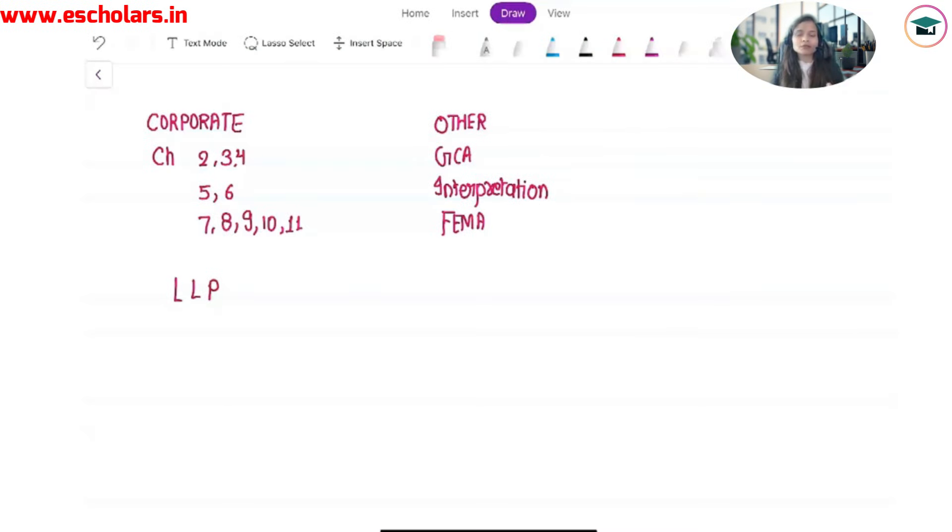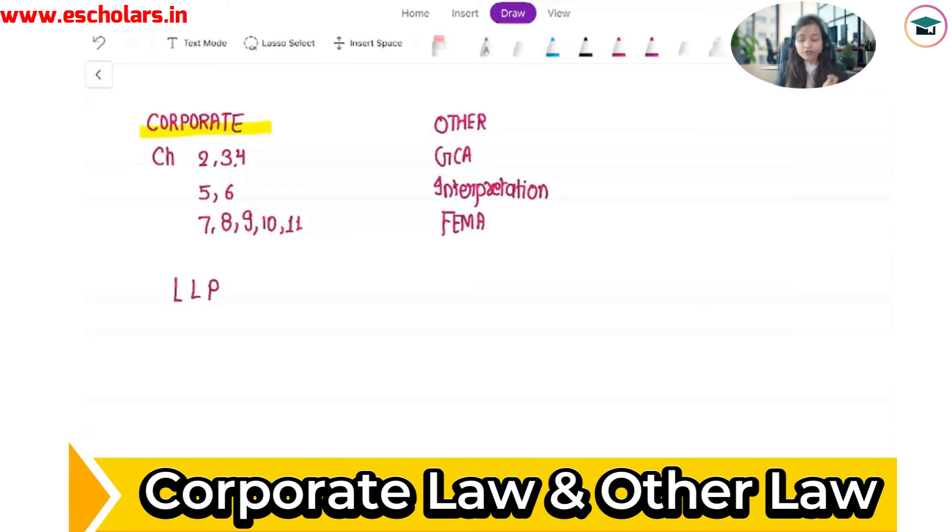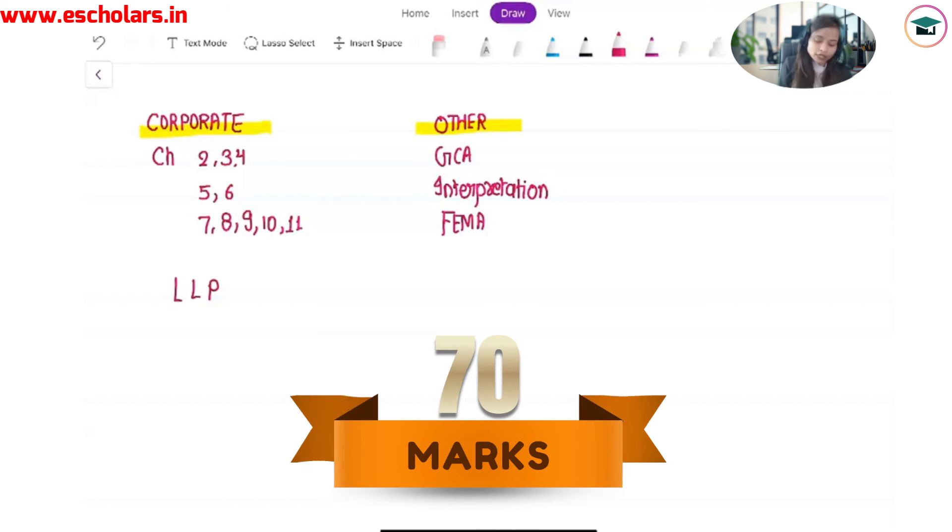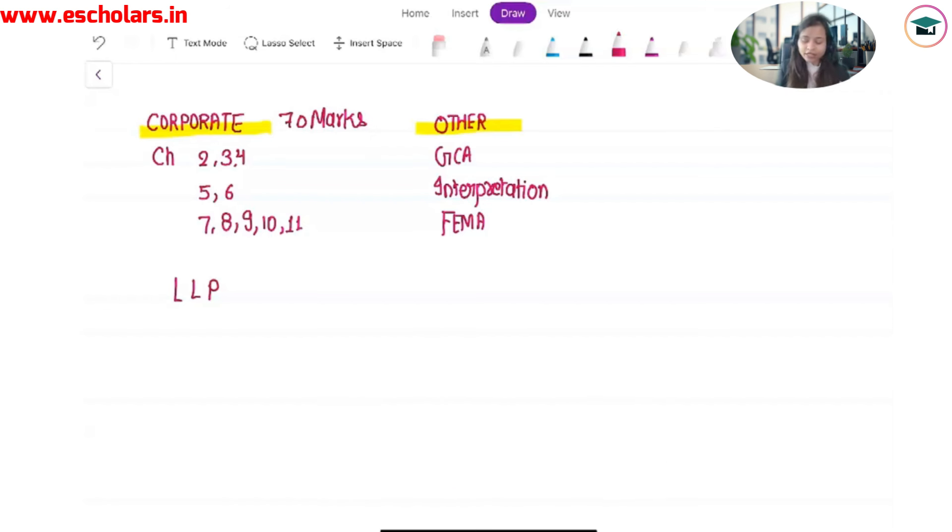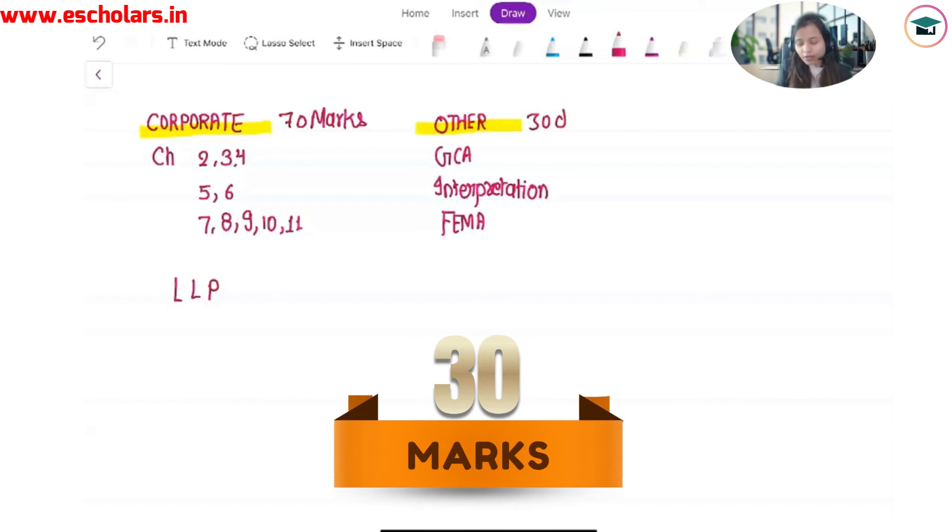Friends, you will know that our subject is divided into two parts. We have corporate laws and other laws. The weightage of corporate law for us is 70 marks, and the weightage for other law is 30 marks.